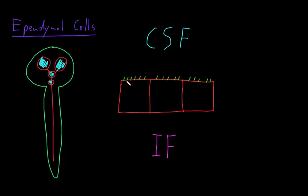They also have some processes that are a little longer called cilia that are these mobile whip-like structures that kind of whip around and help move the cerebrospinal fluid around.